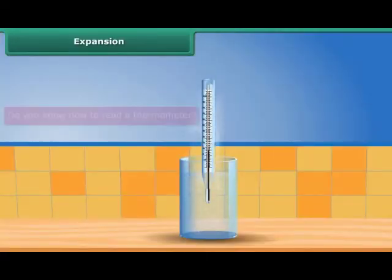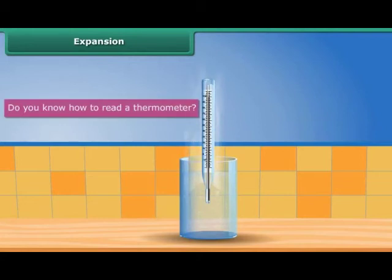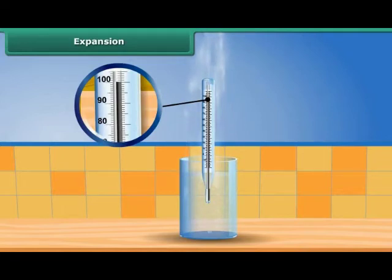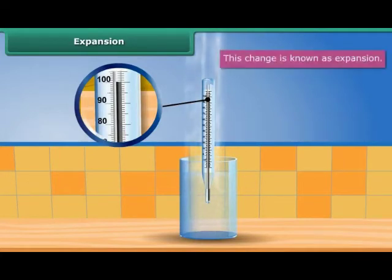Do you know how to read a thermometer? The thermometer shows the temperature when the mercury inside it expands. Since there is a change in the state of the mercury, the thermometer is able to display temperature. This change is known as expansion.